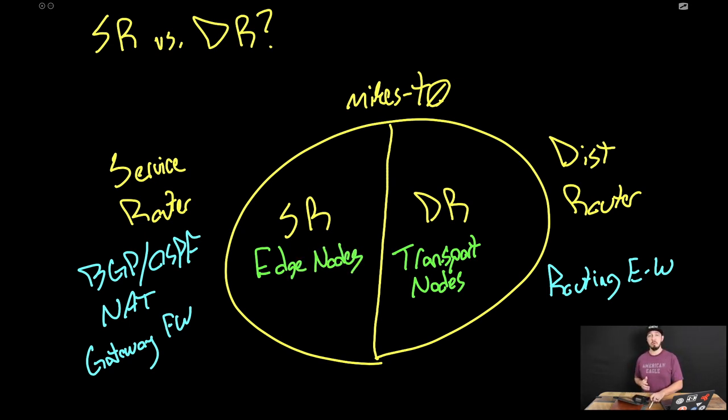So when a lot of times people will say, oh, I set up my T0 for BGP, what they really mean is they set up their T0 for BGP, but the SR component of that T0 is the one actually doing the BGP. So technically these are all one router, but there are separate components that make up that router.